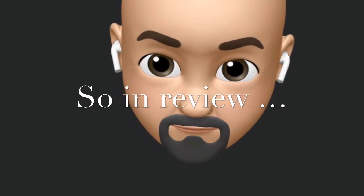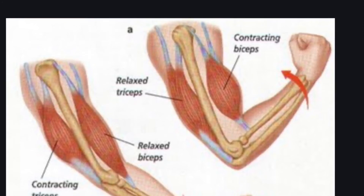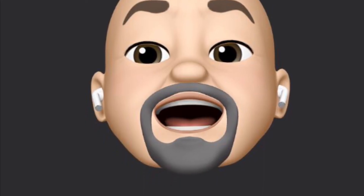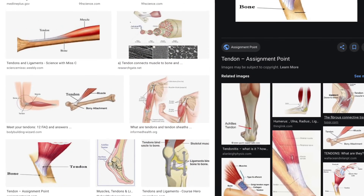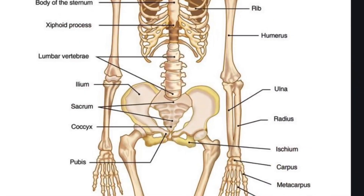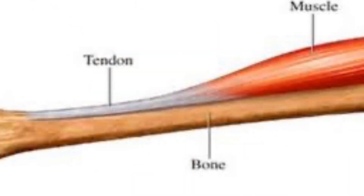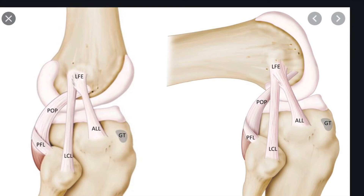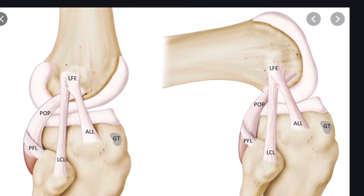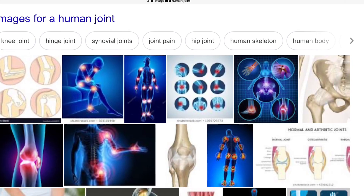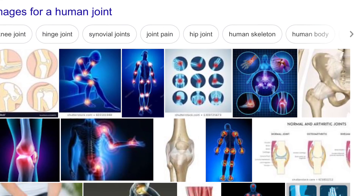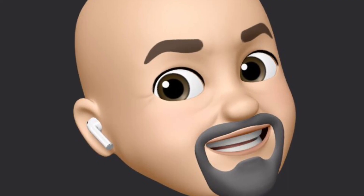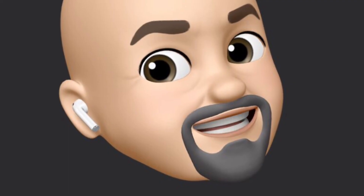So in review: muscles help move the body and muscles are like rubber bands — they contract and expand. But muscles can't move the body by itself; muscles have to be connected to bone. The bones give your body shape, which make up the skeleton. Tendons are the things that connect the muscle to the bone, and ligaments are the things that connect the bones to the bones. A joint is the pivot point where two or more bones connect. Without muscles, bones, tendons, ligaments, and joints all working together, we would not be able to move the way we move.